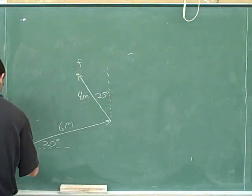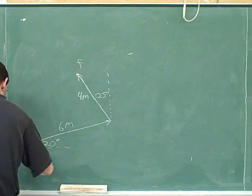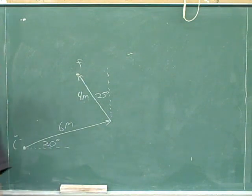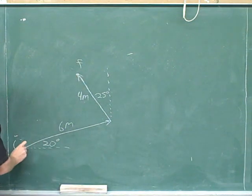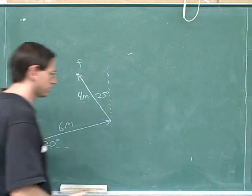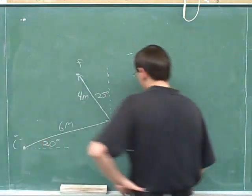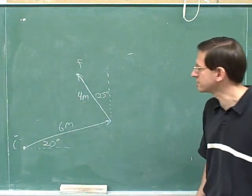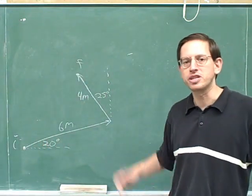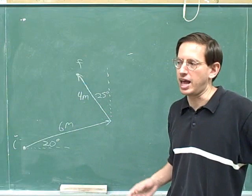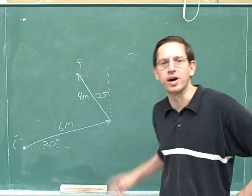This is the final position and this is the initial position, so we want to know how far this point is from this point — what's the overall resultant displacement vector? Please pause the video and try to solve this problem.